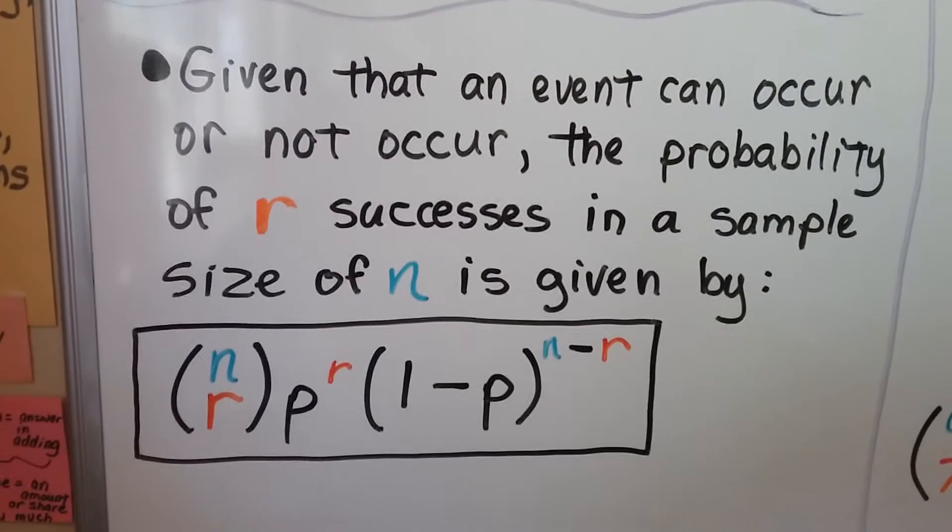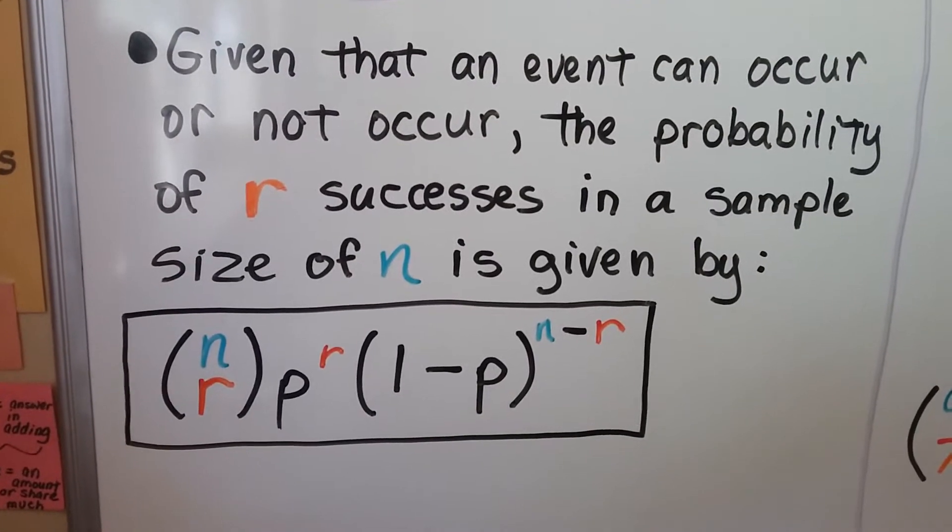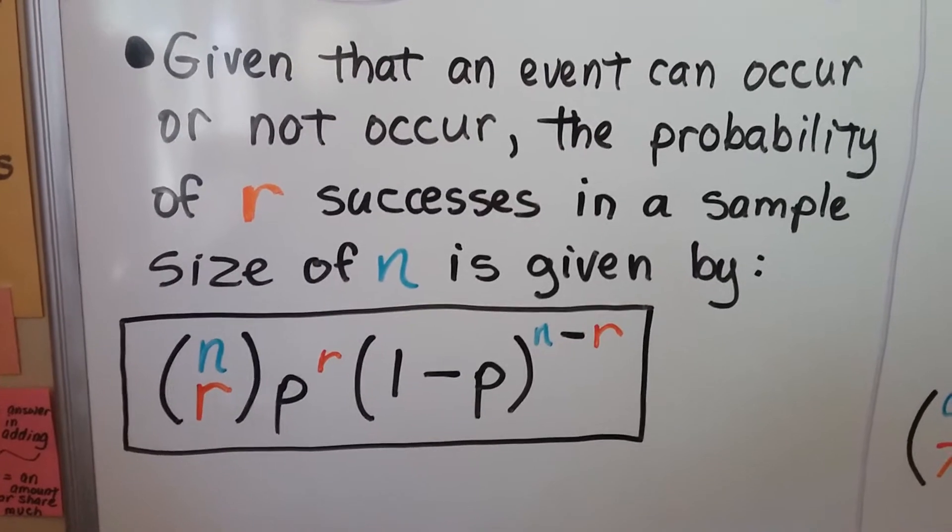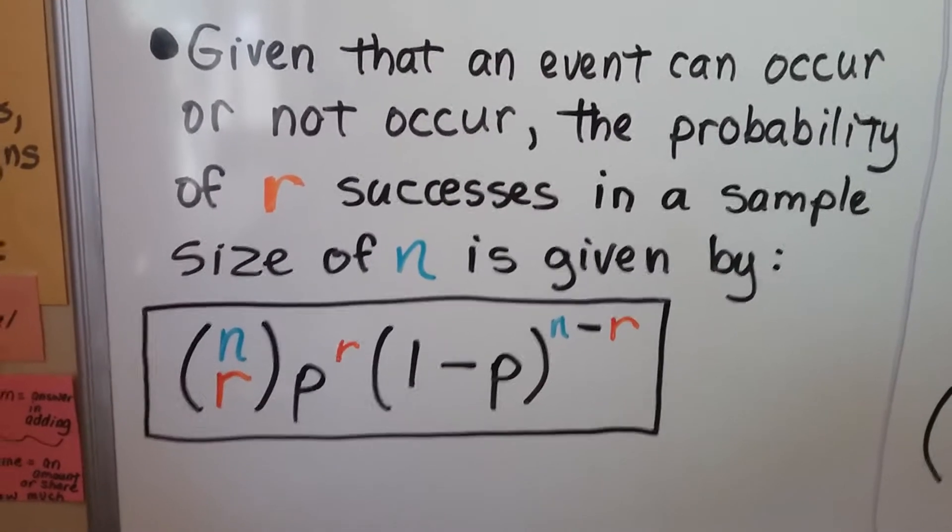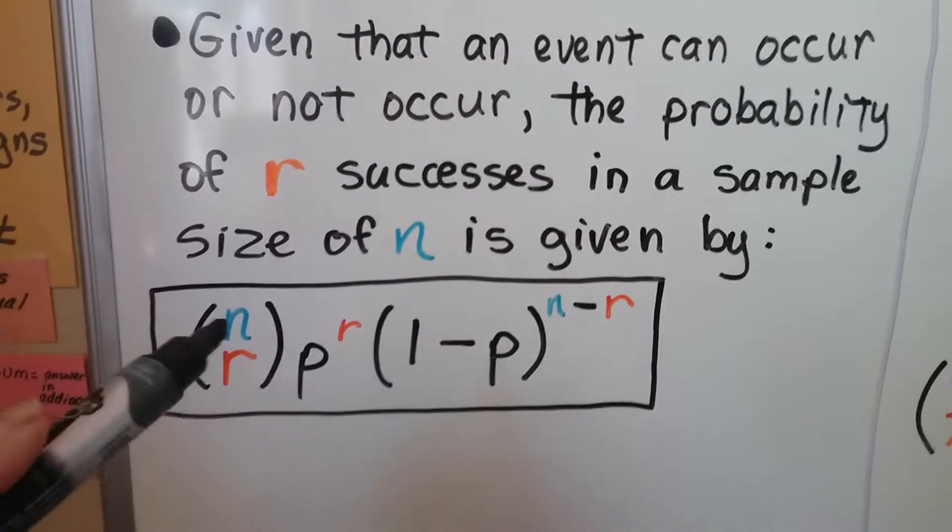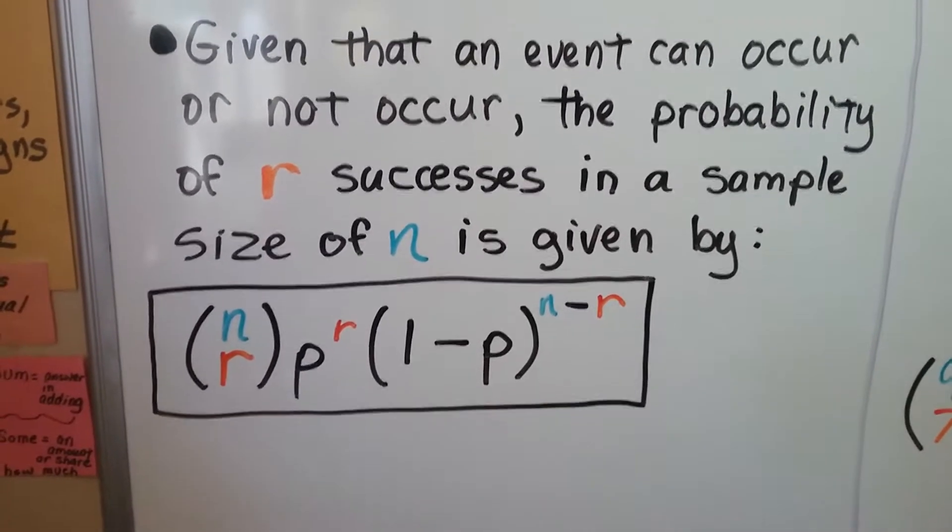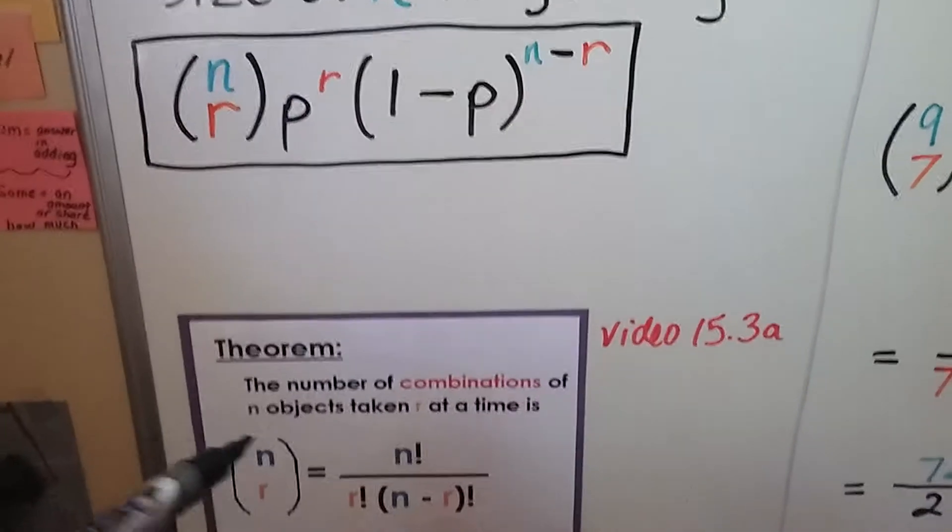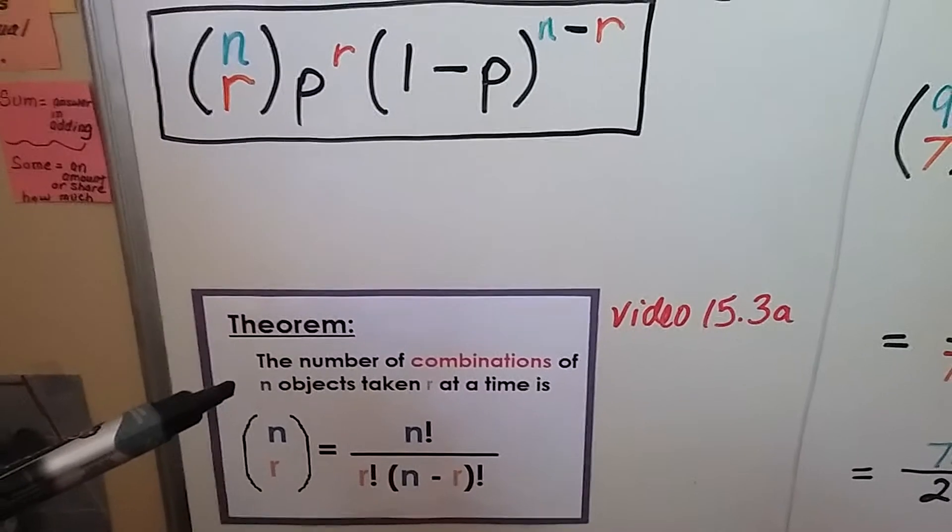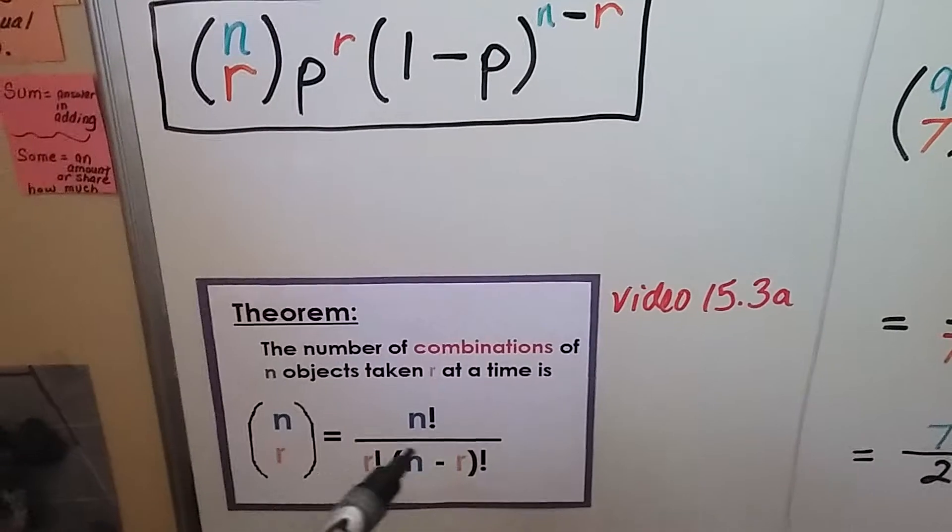Given that an event can occur or not occur, the probability of r successes in a sample size of n is given by this formula. And we've been working with this n choose r throughout this chapter and remember it's the number of combinations of n objects taken r at a time and we can write it with factorials.